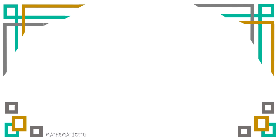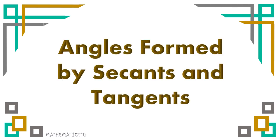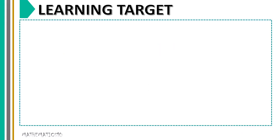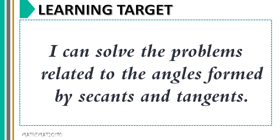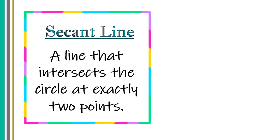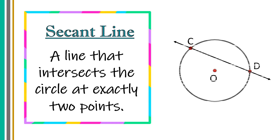Hello everyone. For this video we're going to talk about angles formed by secants and tangents. Our learning target is: I can solve problems related to angles formed by secants and tangents. First, let us recall what a secant line is — it's a line that intersects the circle at exactly two points. Now let us have our sample illustration.